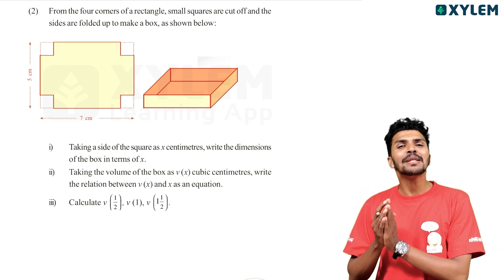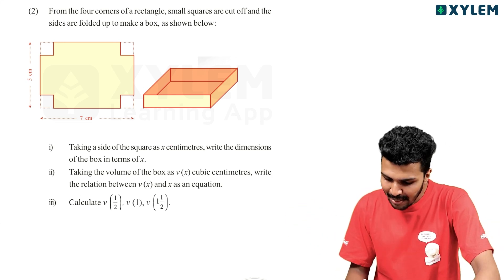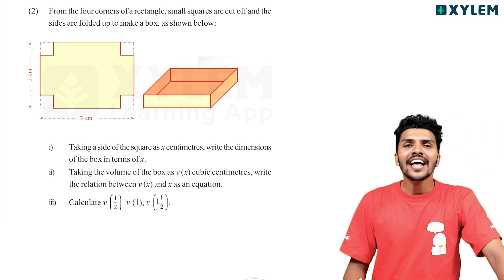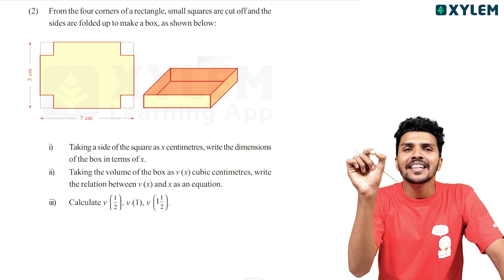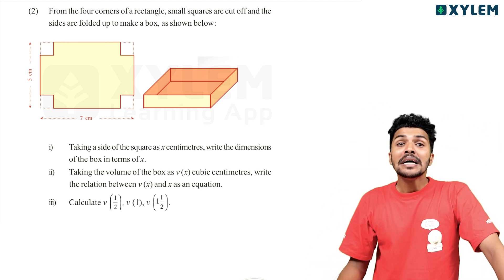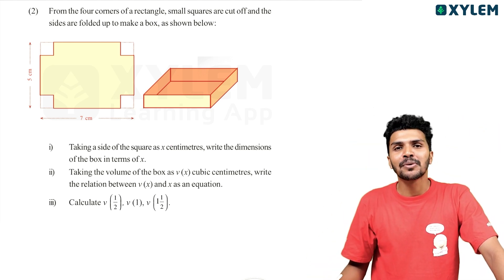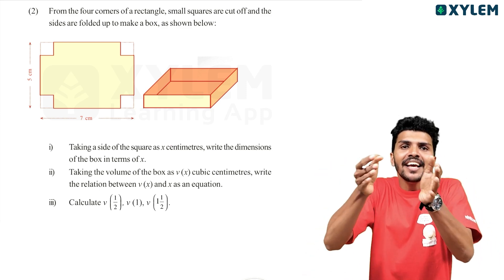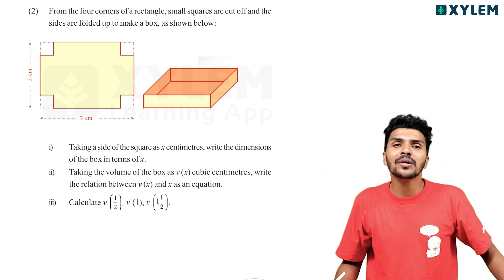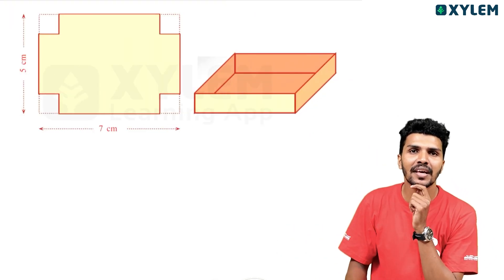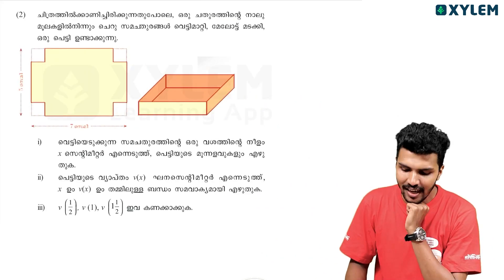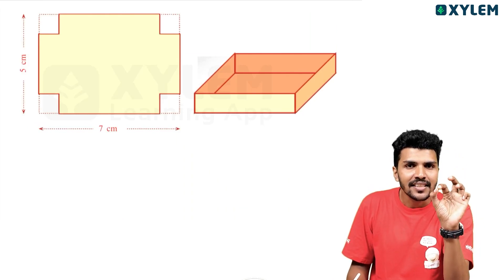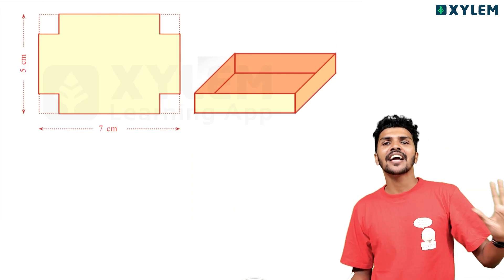Okay, so let's go. So, a rectangle — if you want to make a rectangle, you can make a rectangle. That's why we want to make a box.